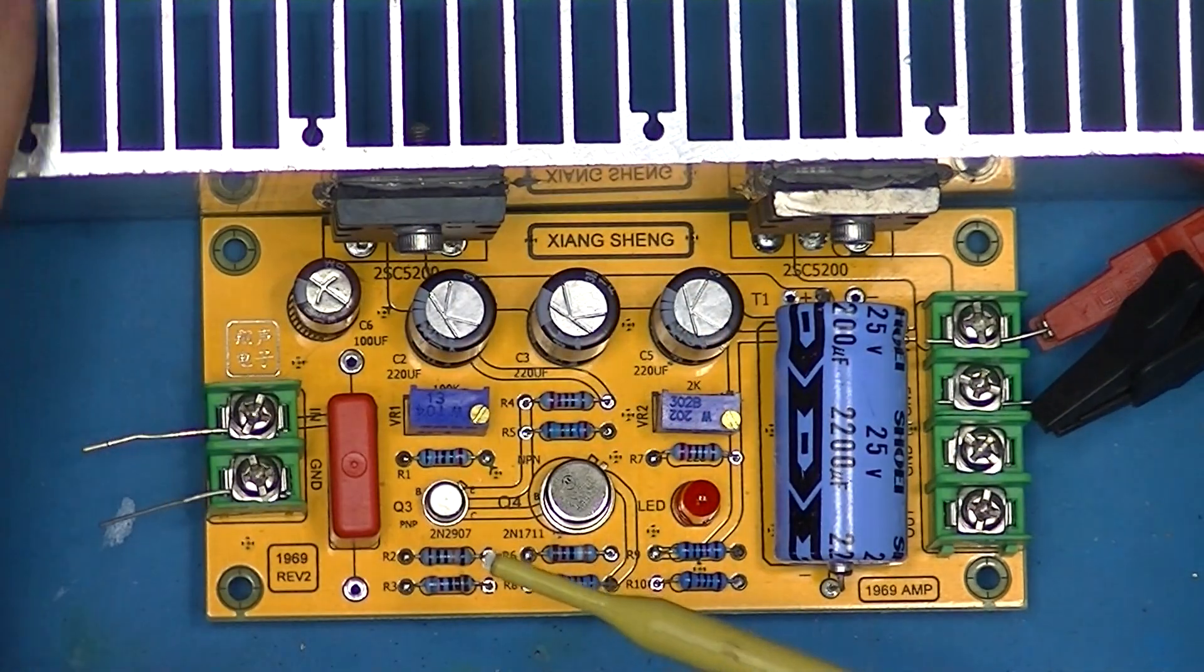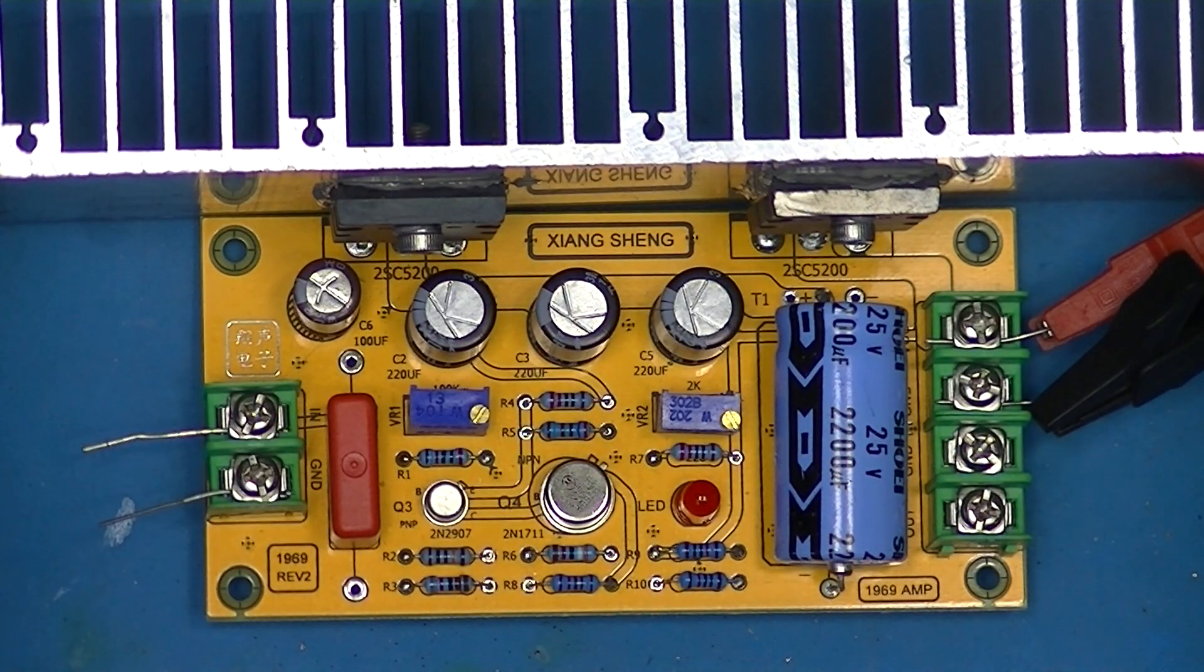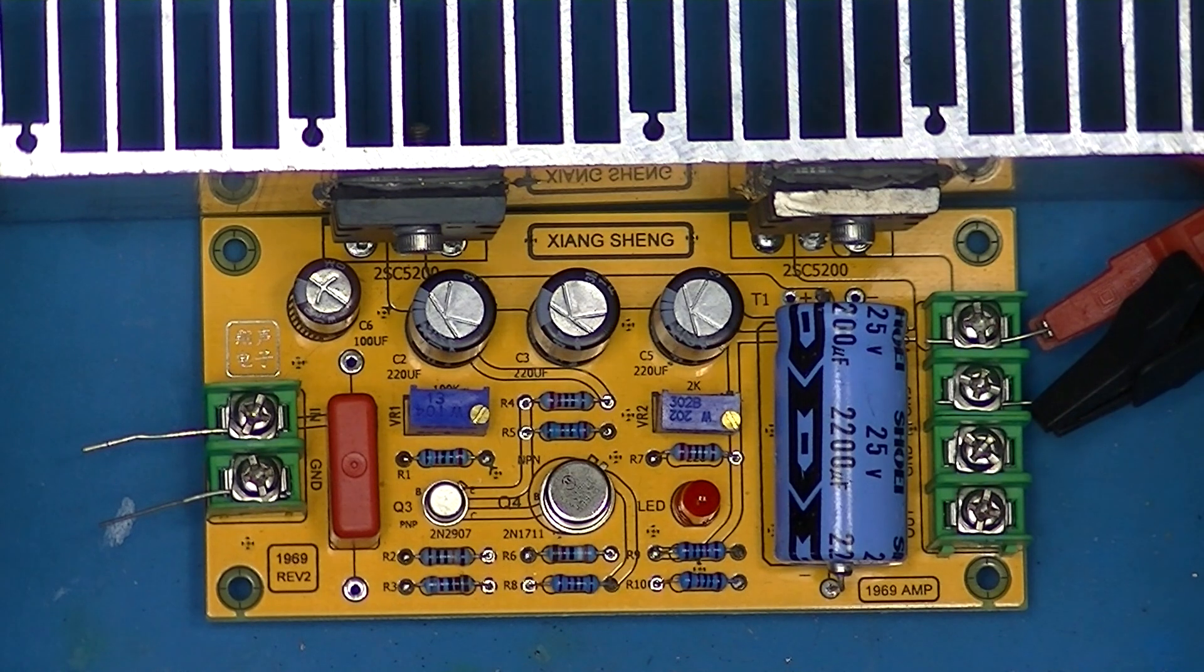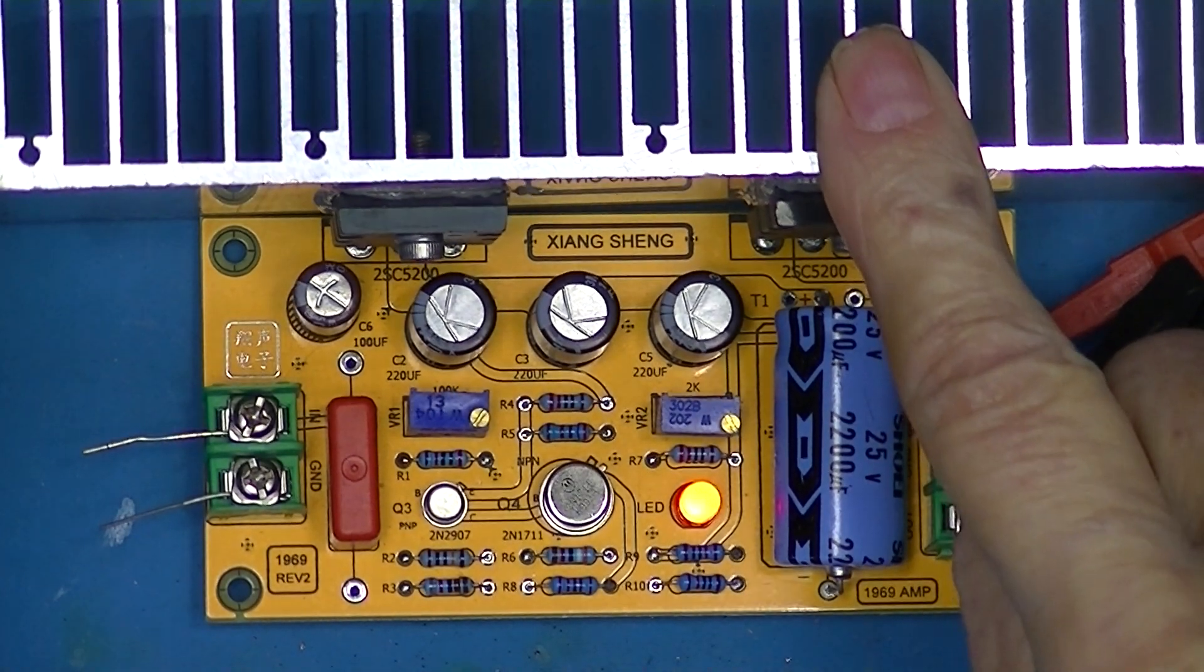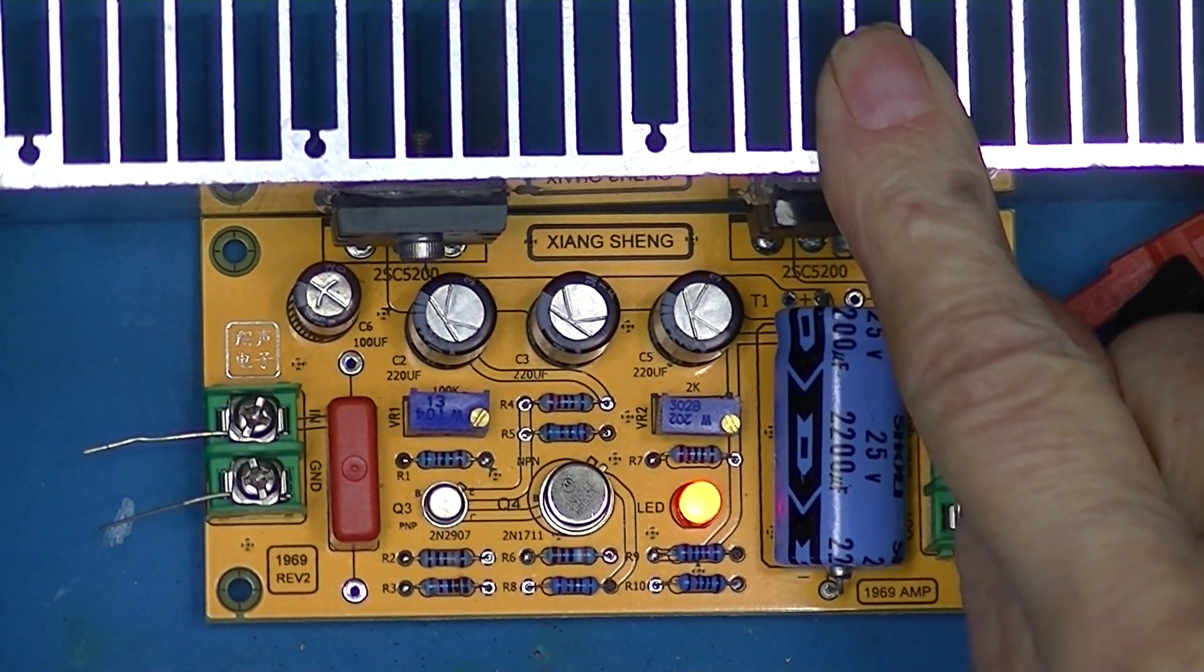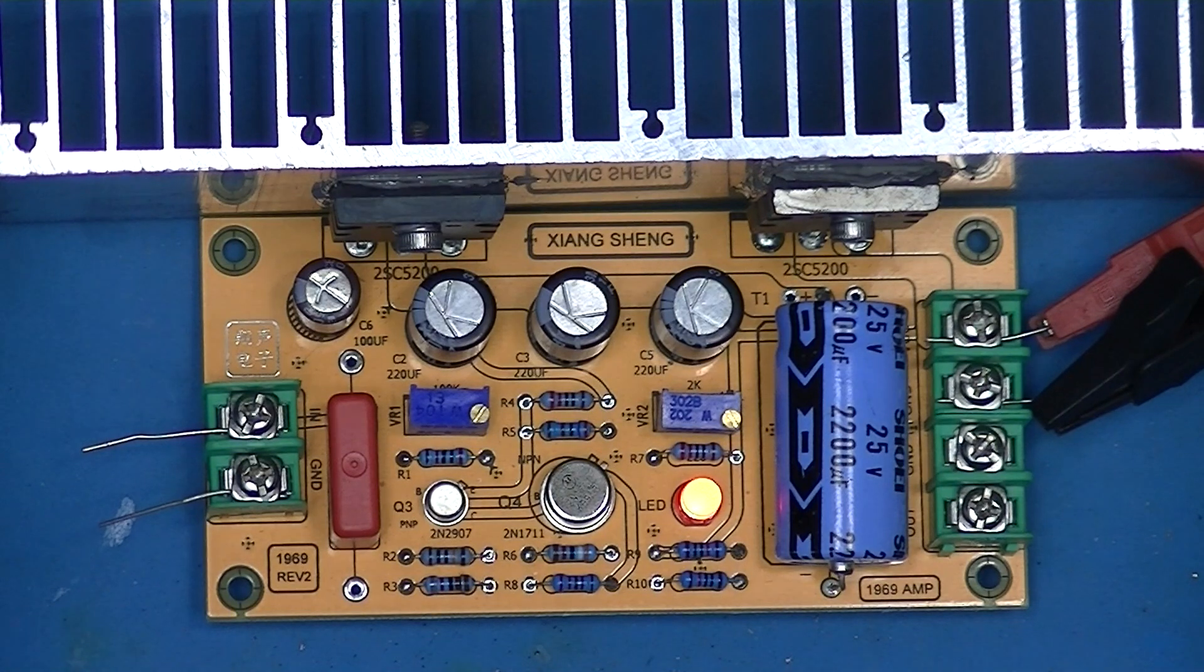Being a class A amplifier, as long as it's powered up, it's going to develop 24 watts worth of heat, no matter what the volume is. 24 volts and one amp is 24 watts.